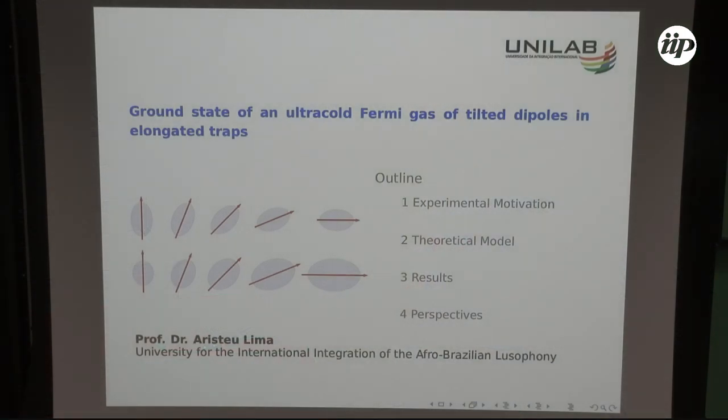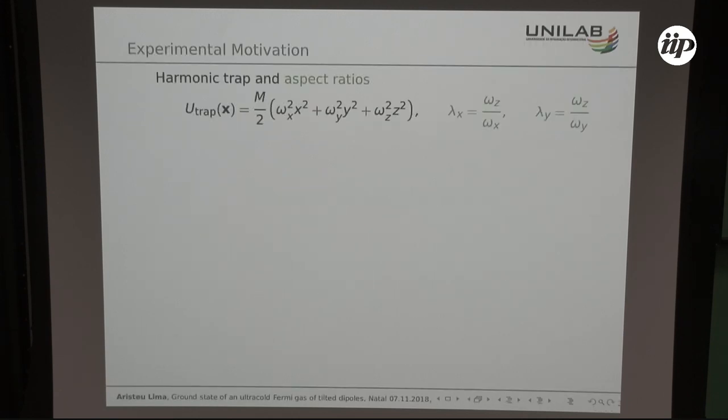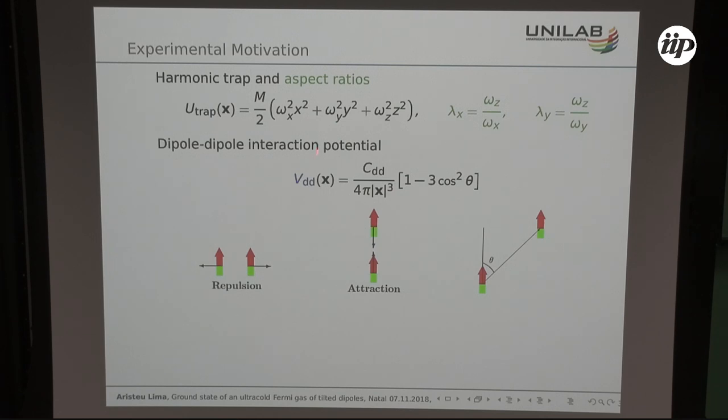Made by our collaborators, and then show you some perspectives on this topic. First of all, our experimental motivation: we're talking about trapped dipoles, meaning that they are in a harmonic potential in three dimensions, and they repel each other if they are put side by side and they attract each other if they are put head to tail.